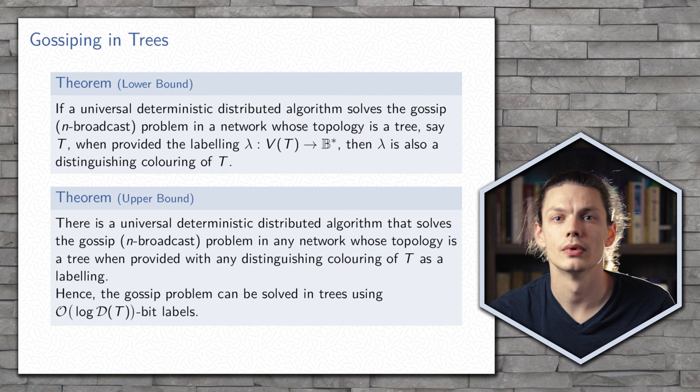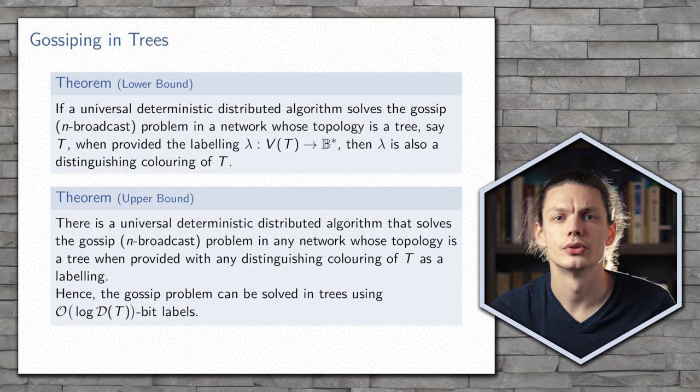However, in order to avoid collisions, every node transmits an encoding of the subtree contained below it. As these encodings build up, they are mapped into a series of delay values, and these delay values prevent the collisions.